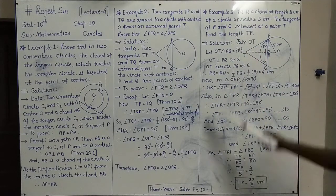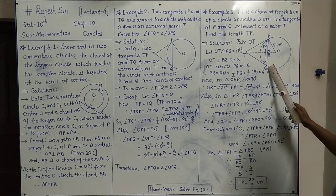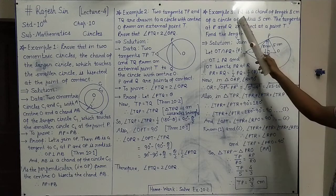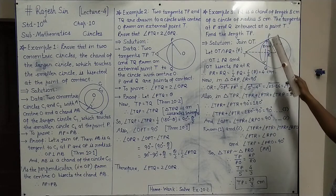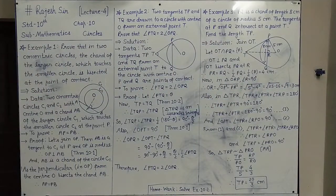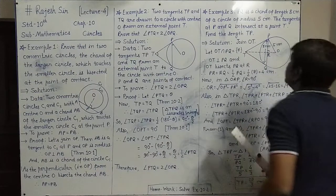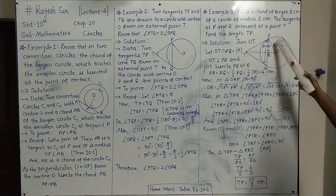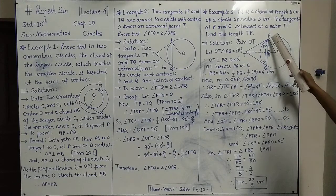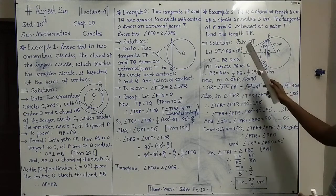Example 3: PQ is a chord of length 8 cm of a circle with center O and radius 5 cm. Tangents at P and Q are drawn from an external point T. We want to find the length of TP.